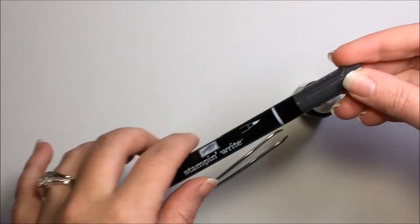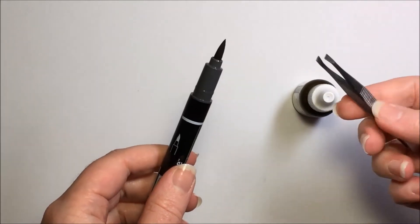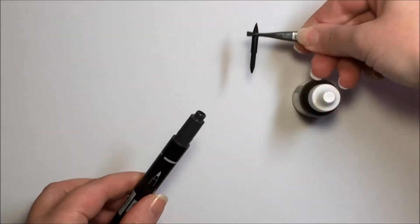So I have basic black here and on the thick marker side I'm going to take a pair of tweezers and I'm just going to pull the nib out gently.